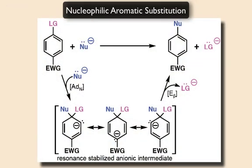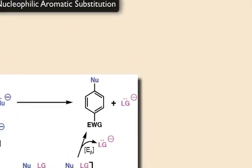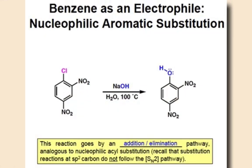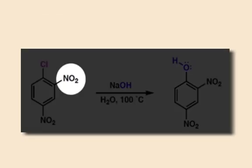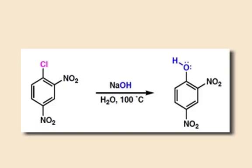However, in nucleophilic aromatic substitution, there's a fundamental reversal of roles of our starting materials. By substituting the ring with strong electron-withdrawing groups, such as nitro groups, the aromatic ring becomes less electron-rich and thus more electrophilic at certain positions.